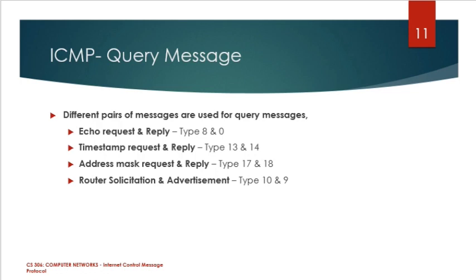Router advertisement message is sent by the router on the LAN network to announce its IP address as available for routing. The router sends advertisement messages to all other host machines in the network, while router solicitation messages go from a particular host machine to the router within the network.